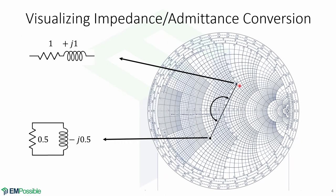Here is how you visualize the impedance-to-admittance conversion in terms of circuits. For an impedance of 1+j1, you can visualize it as a resistor and an inductor in series. When you convert from impedance to admittance, you now have a resistor and an inductor in parallel with values 0.5−j0.5.